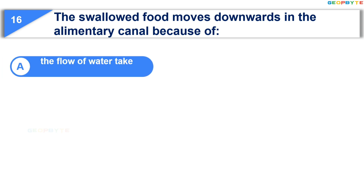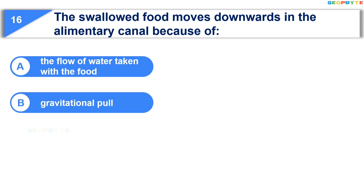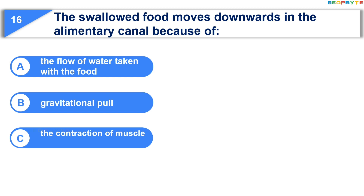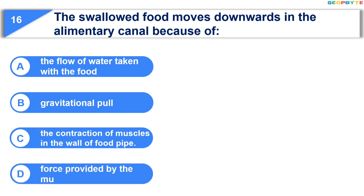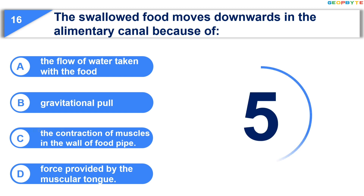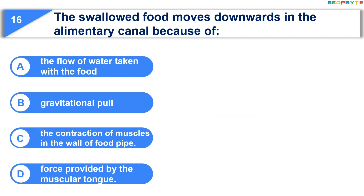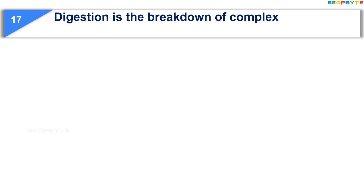Now let us see the next question: the swallowed food moves downwards in the alimentary canal because of — Option A: the flow of water taken with the food; Option B: gravitational pull; Option C: the contraction of muscles in the wall of the food pipe; Option D: force provided by the muscular tongue. Your time is up and the correct answer is Option D: force provided by the muscular tongue.